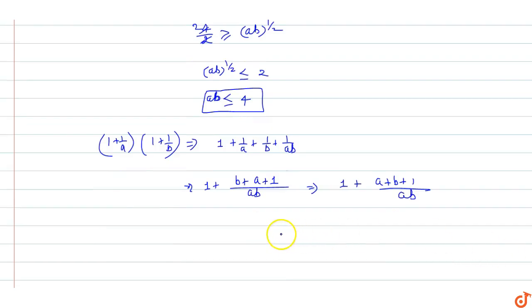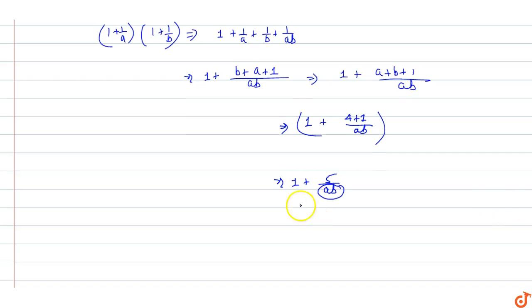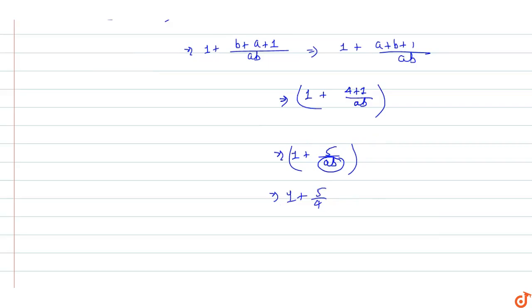To find the minimum value, we use ab's maximum value of 4. Substituting, we get 1 plus 4/ab plus 1/ab. When ab equals 4, this becomes 1 plus 5/4.